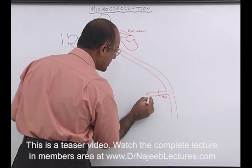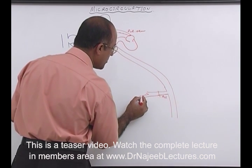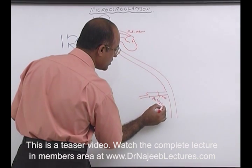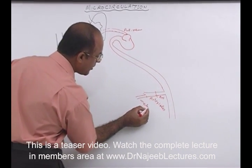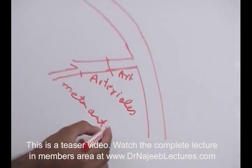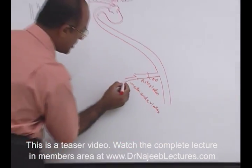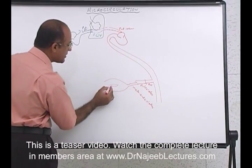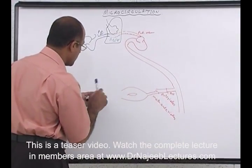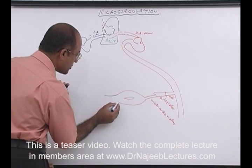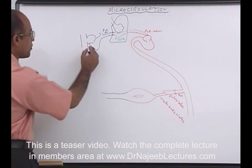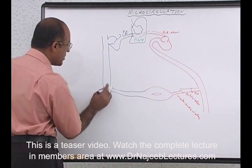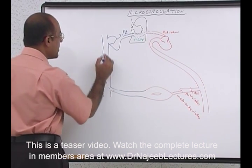The arterial tree divides: first into arteries, then arteries divide into arterioles, then first meta-arterioles. So: arteries, then arterioles, then meta-arterioles. Meta-arterioles break down into capillary networks, and these capillary networks collect into venules. Venules eventually drain into veins, and in the end they take the blood back to the right heart.